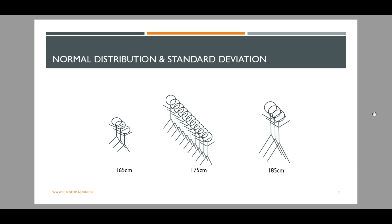In this example we have 16 persons. Three are 165 centimeters tall, ten are 175 centimeters tall, and three are 185 centimeters tall. The average height, or mean, is 175 centimeters.